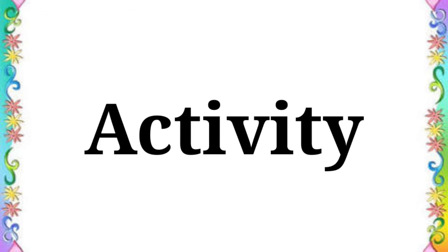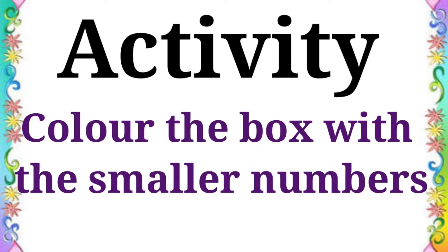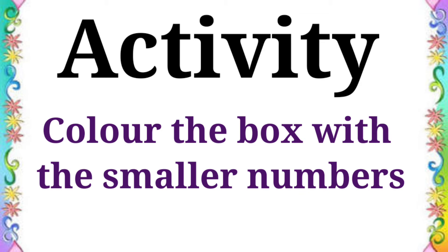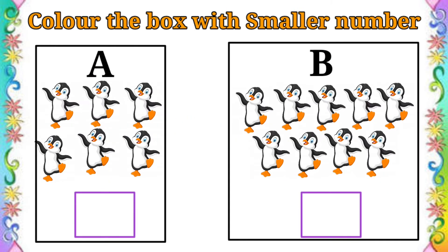Now, activity time. Colour the box with smaller numbers. There are two sets of pen queens: A and B. Let's count A set of pen queens. 1, 2, 3, 4, 5, 6. A set has 6 pen queens.